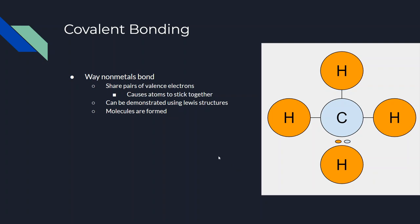Next I'm going to be talking to you about covalent bonding. It's the way that nonmetals bond. Elements or atoms share their valence electrons, which causes these atoms to stick together. It can be demonstrated using Lewis structures, as seen at the right. And molecules are formed this way.